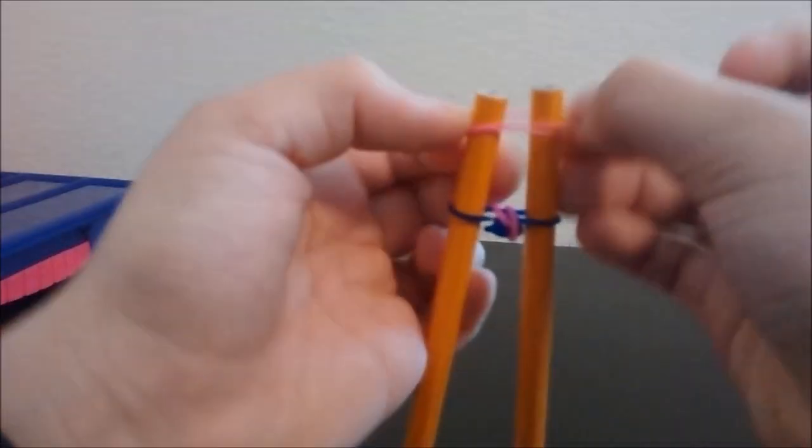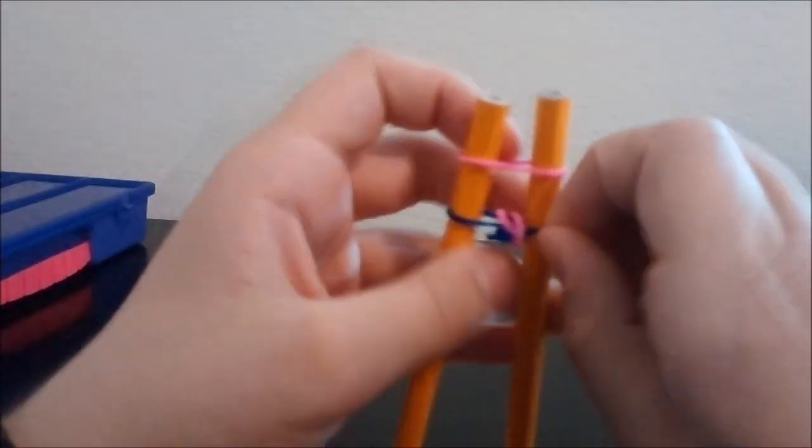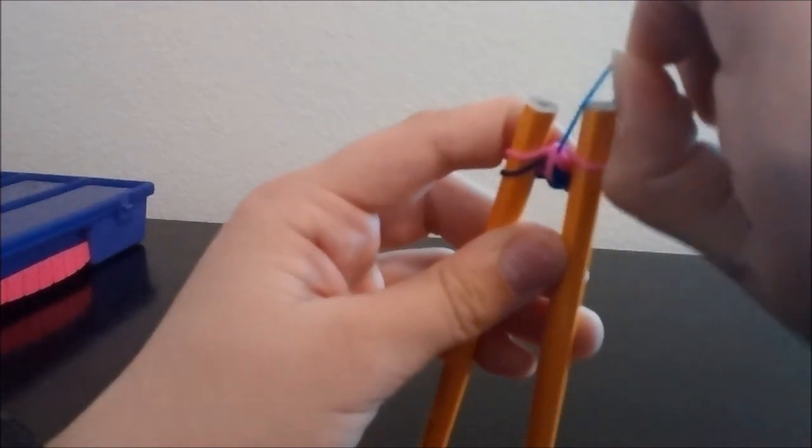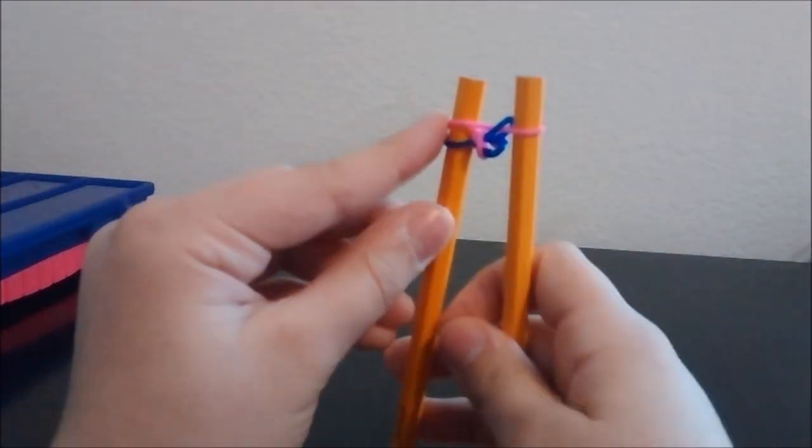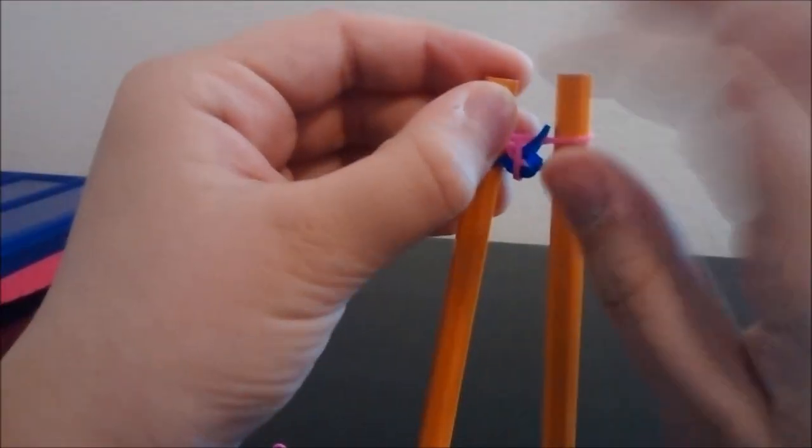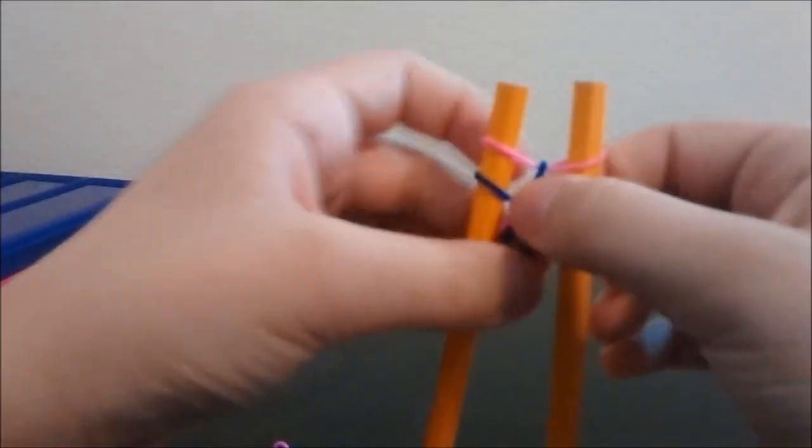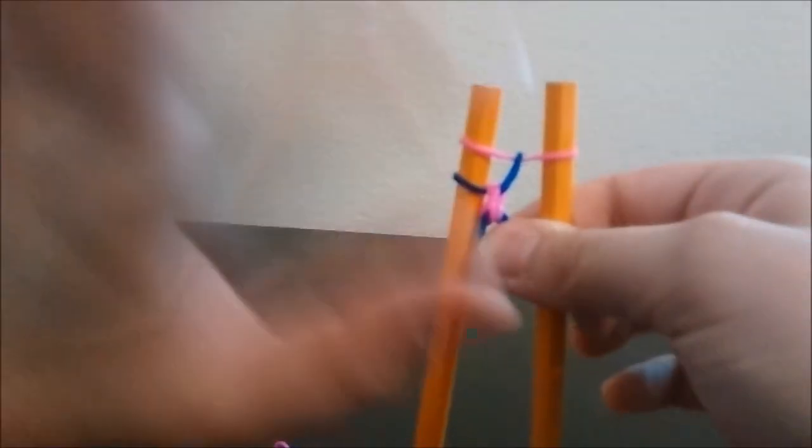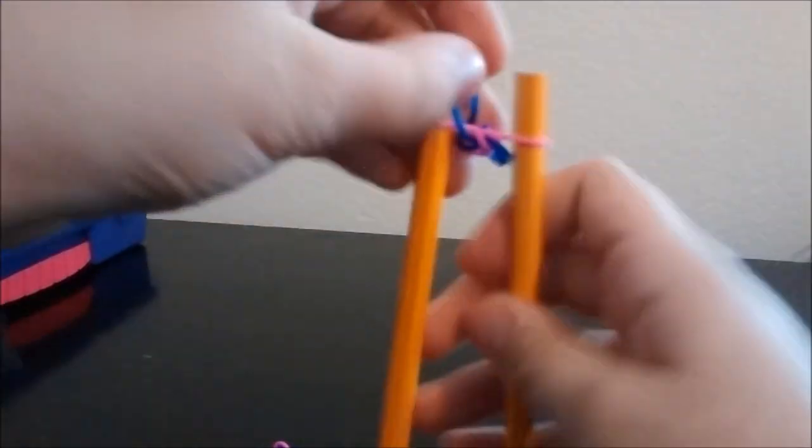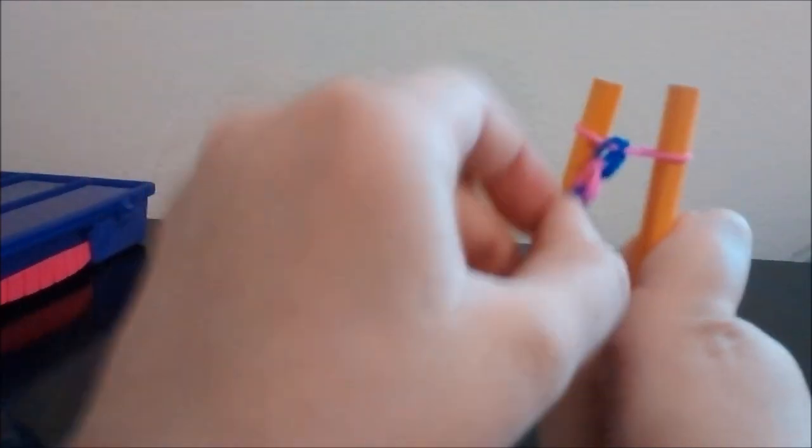Pull my bottom up and over the pencil. And you never twist any more rubber bands except for your very first one. These are not twisted, these are just plain. Then pull the other side up. Once you've got both sides up, there you go.